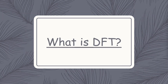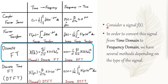What is DFT? Consider the signal f of t. In order to convert this signal from time domain to frequency domain, we have several methods depending on the type of the signal. For a continuous and periodic signal, we use complex Fourier series. For continuous and aperiodic signals, we have Fourier transform. For discrete and periodic signals, we use discrete Fourier transform. And for discrete and aperiodic signals, we have discrete time Fourier transform.